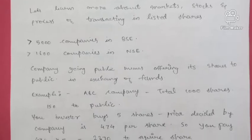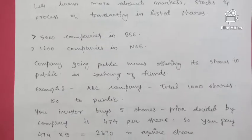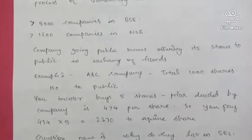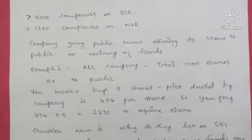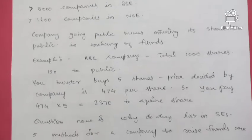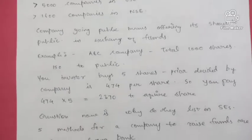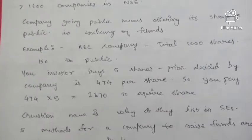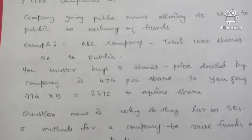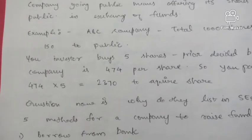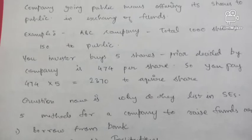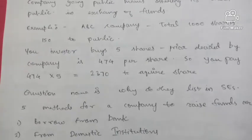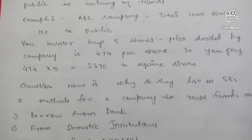When a company goes public, it offers its shares to the public in exchange for funds. For example, take a company ABC — it has a total of 1,000 shares and is planning to give 150 shares to the public. As an investor, you buy five shares at 474 rupees per share, paying a total of 2,370 rupees.